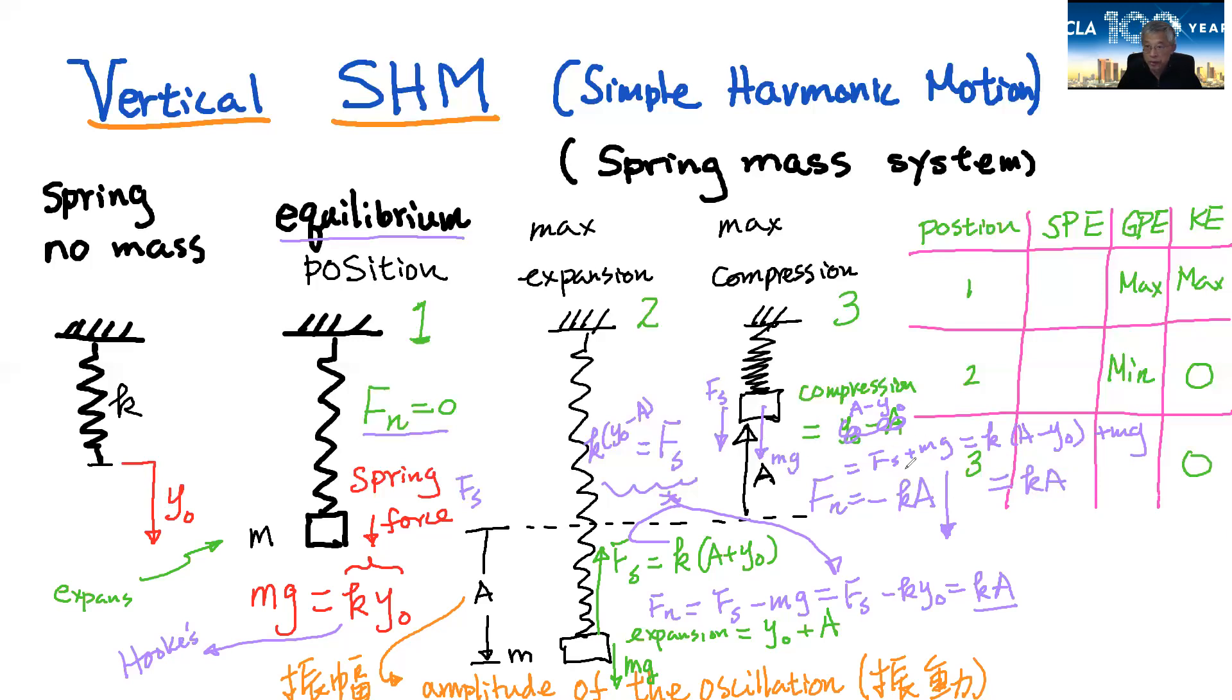So this net force here will be pointing down like this. So this will be positive pointing down like that. And right here, this net force is point up this way. And it's equal to also equal to ka. So both are equal to ka. One is point up, one is point down. So that's the situation for vertical SHM.